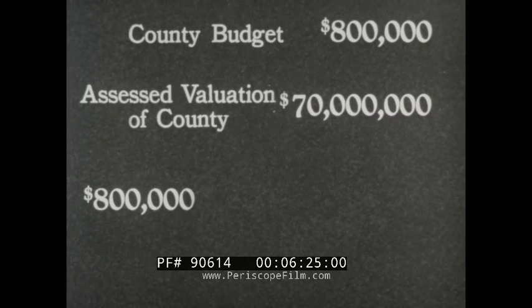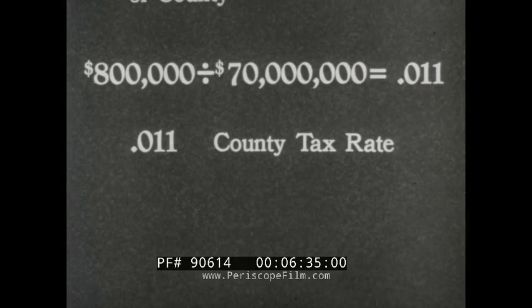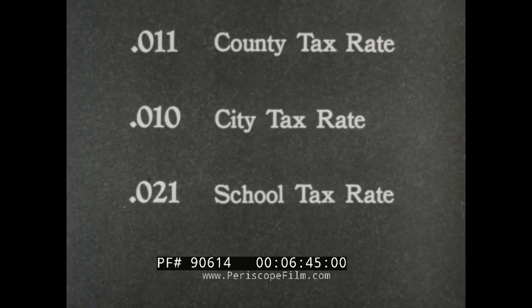In this case, the county budget is eight hundred thousand dollars and the assessed valuation of the property within the county is seventy million dollars. Eight hundred thousand divided by seventy million gives us the county tax rate. In the same way, the city sets a tax rate and the school district sets its tax rate. By adding these rates we can find the total tax rate on Mr. Johnson's property.